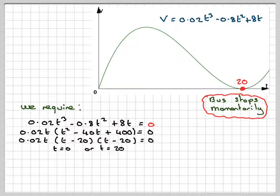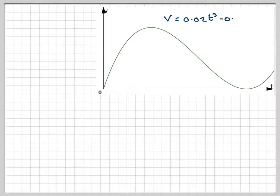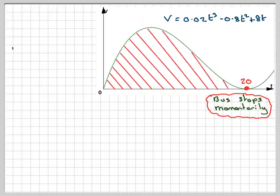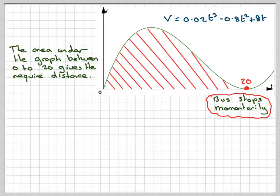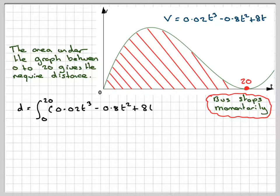We need to calculate the distance. The distance on a velocity-time graph is given by the area underneath the curve. We need to integrate the curve from 0 to 20. Setting up the correct integral, it's important that you set it up properly. The distance equals the integral from 0 to 20 of the function with respect to t.